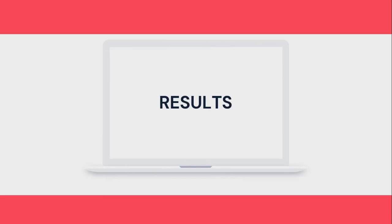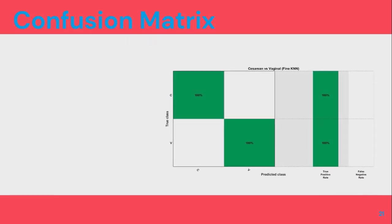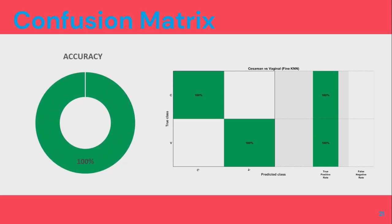The results show that the confusion matrix yields 100% accuracy by adopting the framework of signal acquisition, feature extraction, serial concatenation of the FHR and uterine contraction extracted features, and classification using Fine KNN. It is not only simple in computation, but also very easy to acquire the signal — an external tocodynamometer is wound around the mother's abdomen along with a fetal heart rate monitor, and both signals are acquired simultaneously using the CTG monitor. It is very easy to implement in hospitals.